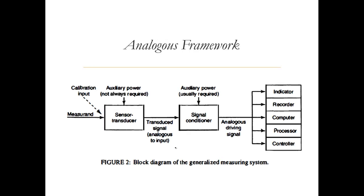An analogous second framework for breaking down instruments into components divides the instrument into just three parts: a sensor/transducer stage, a signal conditioning stage, and a record-out or readout stage. In this framework, the measurement sensor converts to an output analogous to the input. Then driving signals are produced through signal conditioning, and the recording stage connects to a controller, computer, or recorder.